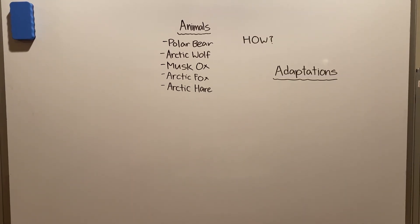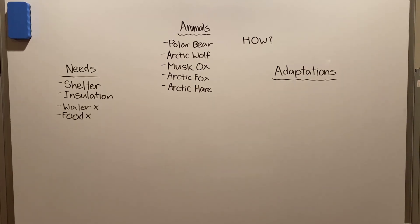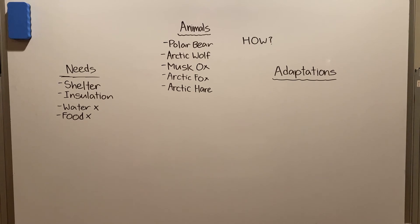To understand that, we are going to need to understand these animals' basic needs, which are shelter, insulation, water, and food. Food can be obtained from the sea by fish or plankton. And while you might say that because of a slow water cycle it might be hard to find fresh water, a slow water cycle also reduces evaporation, which can leave large deposits of water. So those two are crossed off the list.